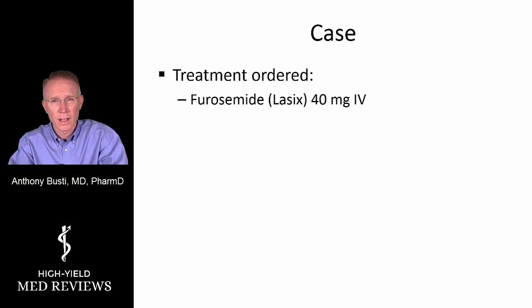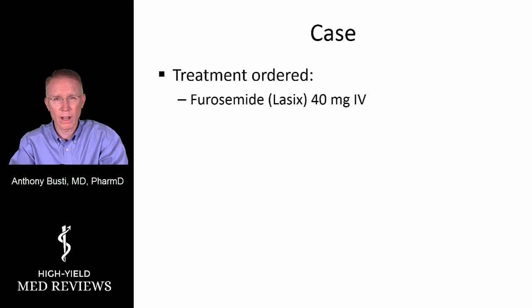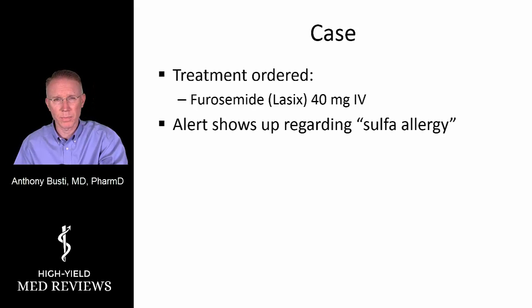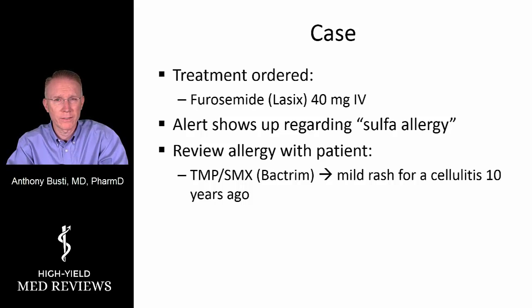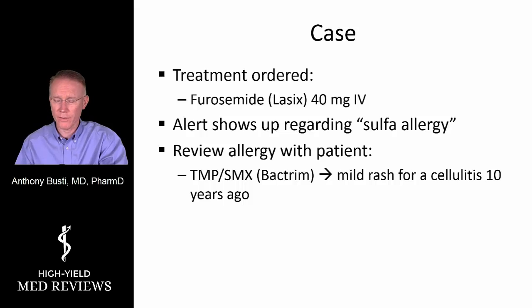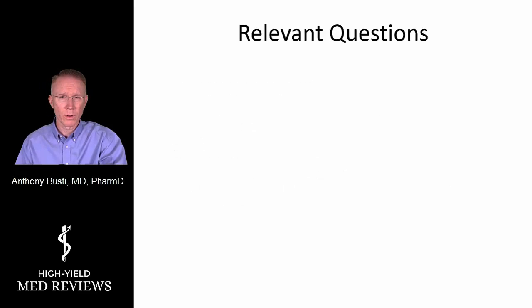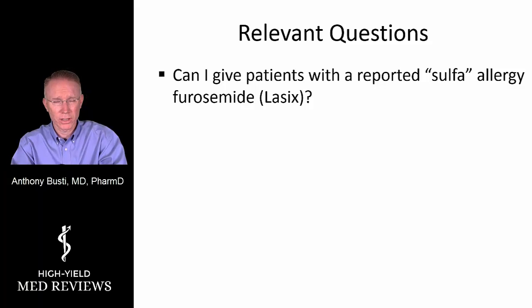Treatment is ordered: furosemide or Lasix 40 milligrams IV for the acute pulmonary edema, entered into the electronic medical record. But an alert pops up stating the patient has a sulfa allergy — consider changing therapy. Reviewing the allergy with the patient, approximately 10 years ago he received Bactrim, trimethoprim-sulfamethoxazole, for cellulitis and developed a mild rash. No anaphylaxis, no Stevens-Johnson syndrome, no toxic epidermal necrolysis — just a reported rash, documented at triage. So the question is: can I give this patient with a reported sulfa allergy furosemide or Lasix?